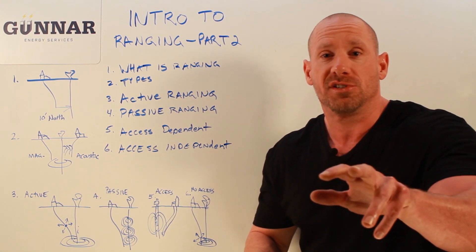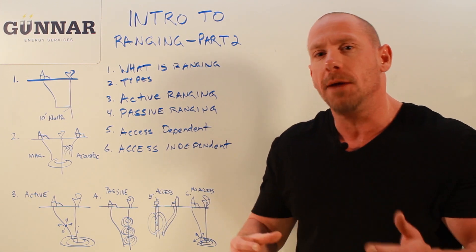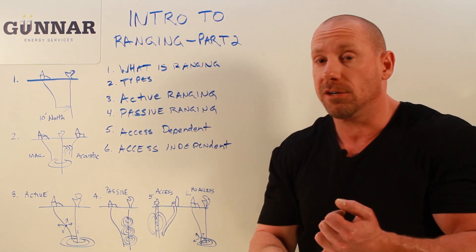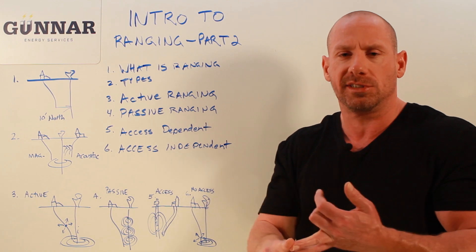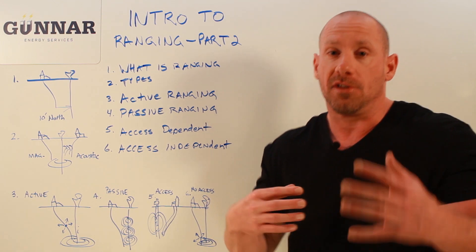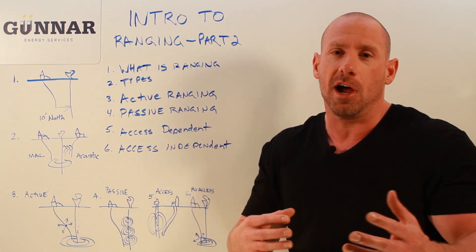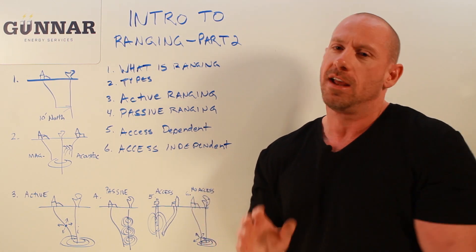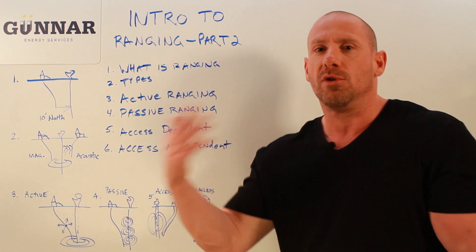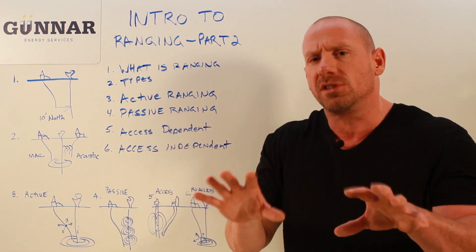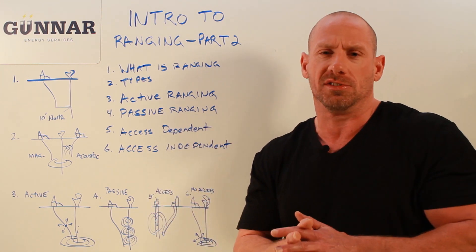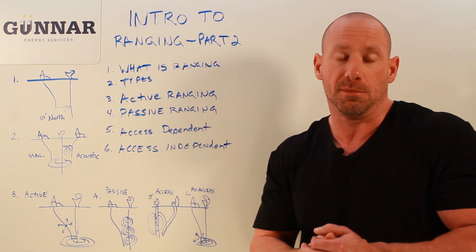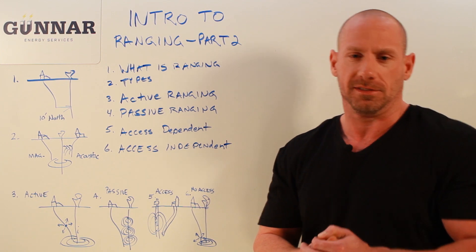Number two is the types of ranging, so I discussed magnetic ranging and acoustic ranging. Now there are some other types — they're not quite commercialized yet, so maybe we'll get into those later on down the road — but we'll just keep our discussions to the commercial deployments these days.